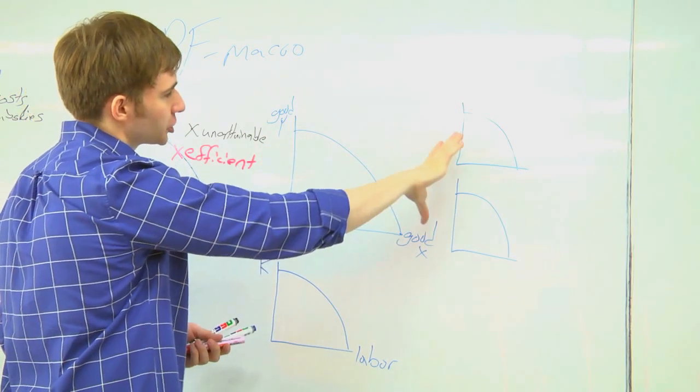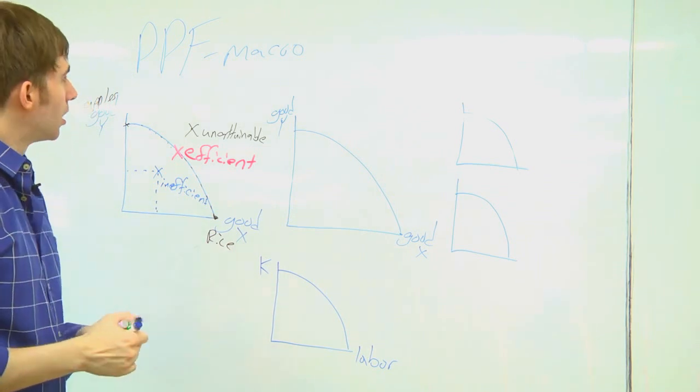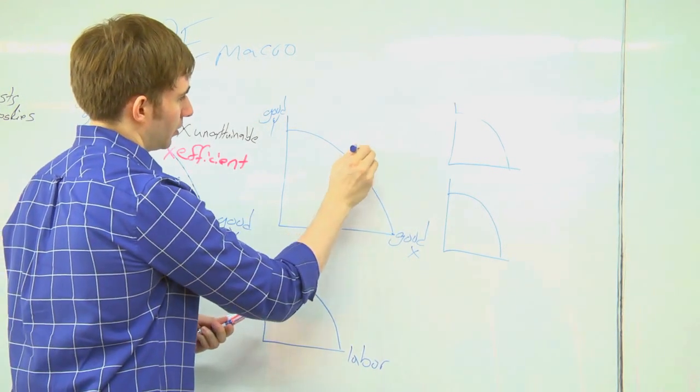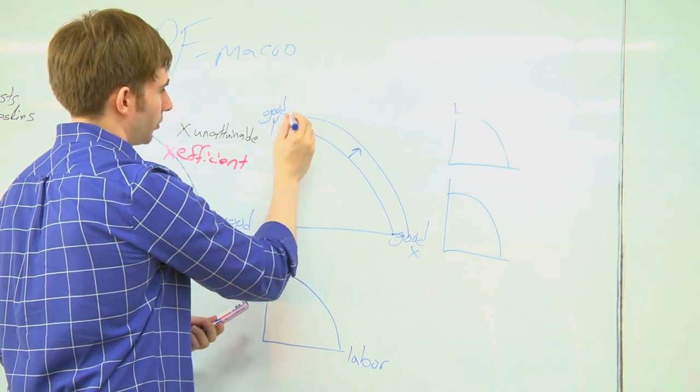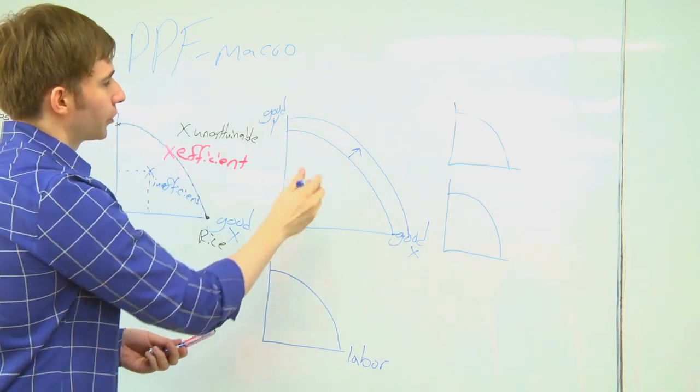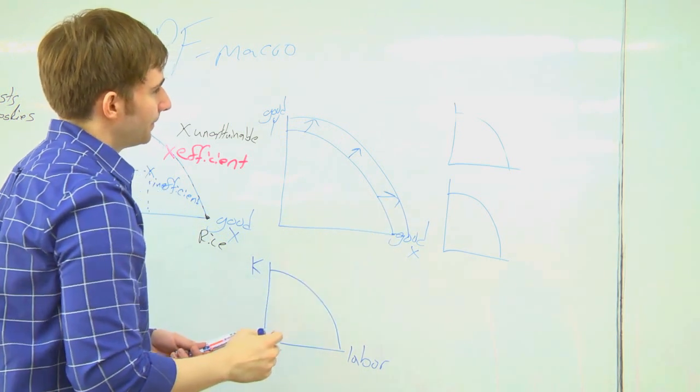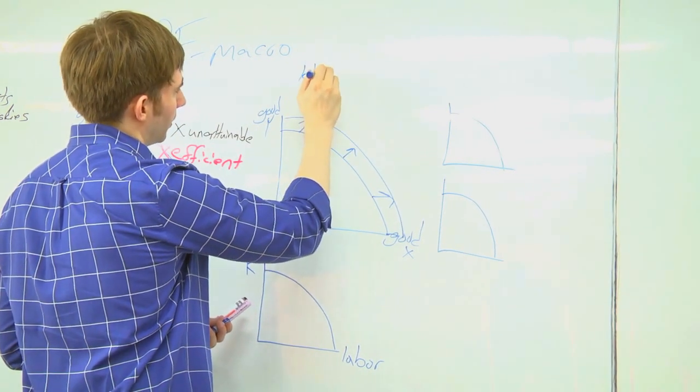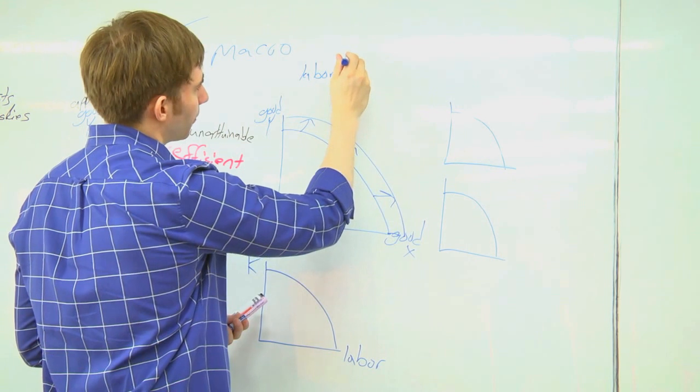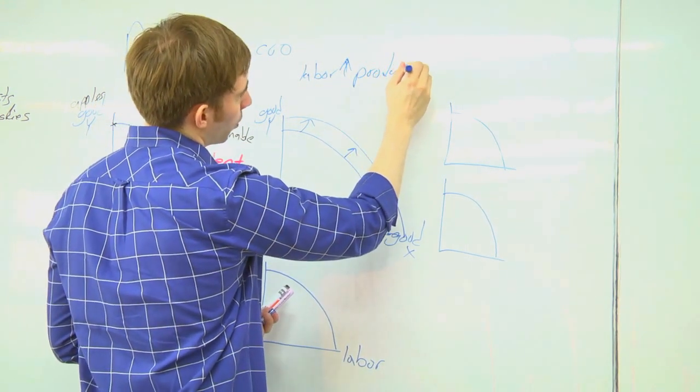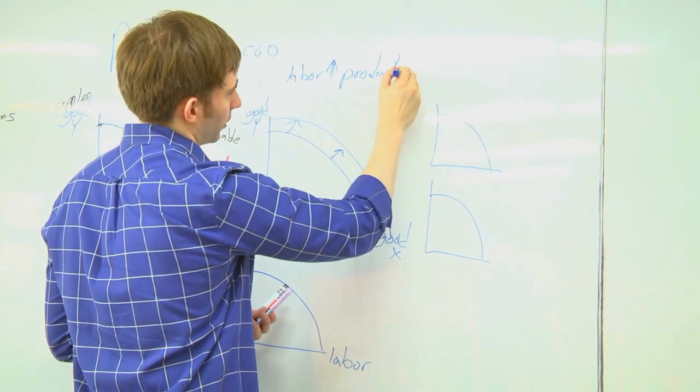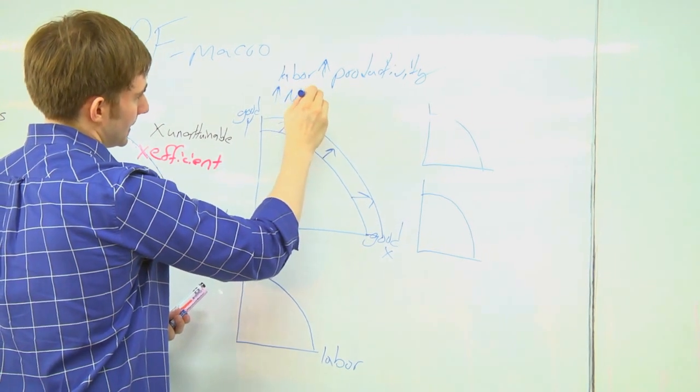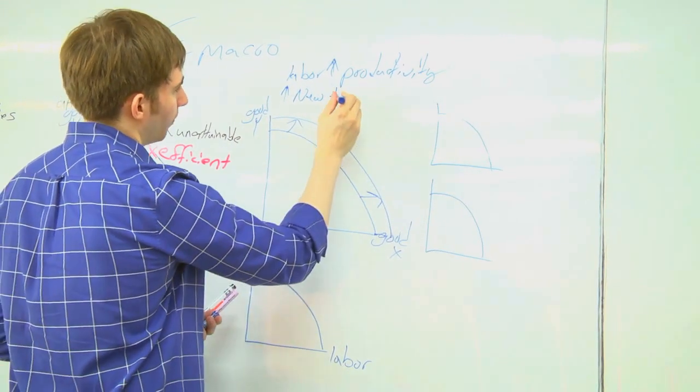What are some things that can shift our production possibility frontier? So I could go from this curve out. We could increase, so now I can produce more of both goods. Something that can shift both things might be an increase in labor or labor productivity. We have more workers or our workers are working harder. New technology comes along that helps us produce more of both goods.